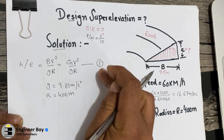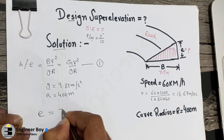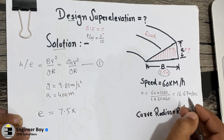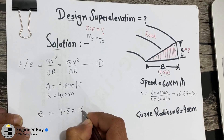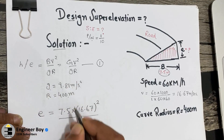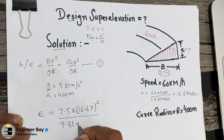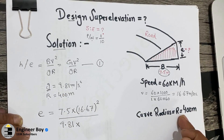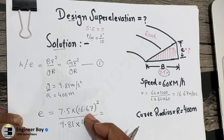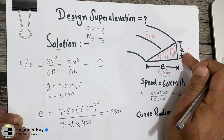Now we plug all the values into the equation. e equals B which is 7.5, times V squared which is 16.67 squared, divided by g which is 9.81 meters per second squared, times the radius of curvature which is 400 meters. Doing the mathematics, we get e equals 0.533 meters as the super elevation.